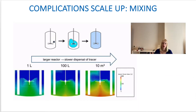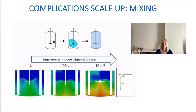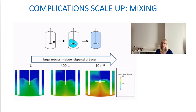Looking at this typical stirred tank reactor, the colors indicate where the tracer will go. You will see that the bigger it gets, the less homogeneous the spread throughout the reactor will be, and you will get issues with mixing. Most cells need oxygen to survive. In the smaller scenario, oxygen is evenly distributed throughout the vessel, but as you scale up, less and less oxygen gets through to all the cells. Even though oxygen is present, it's not able to reach everywhere in the reactor, so not all cells will be able to access oxygen and some will die off.